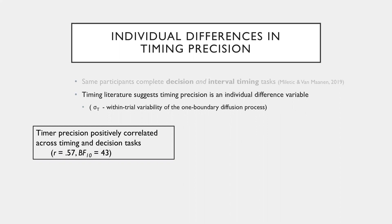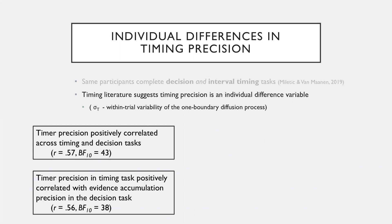And so what we looked at was the precision of that timer for the inverse of the variability. And we find that it's positively correlated across the timing and decision tasks with quite a decent correlation coefficient there.